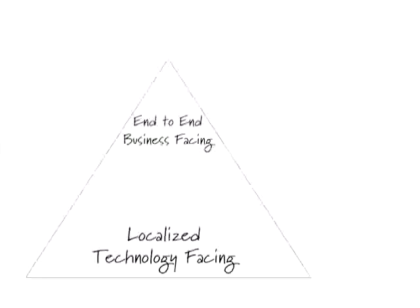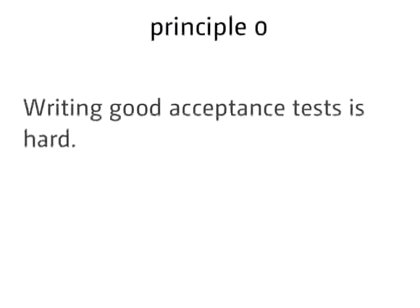The things at the top — UI and service level tests — are end-to-end business-facing tests, and at the bottom we have our localized technology-facing tests. We're going to present five principles. This is an IT conference, so the first principle is principle zero, of course.